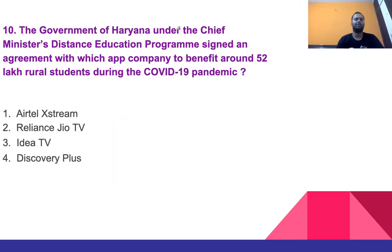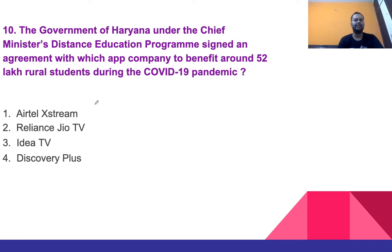Question 10: The government of Haryana, under the Chief Minister's Distance Education Program, signed an agreement with which app/company to benefit around 52 lakh rural students during the COVID-19 pandemic? Options: Airtel Xstream, Reliance Jio TV, Idea TV, or Discovery Plus. The right answer is Reliance Jio TV.